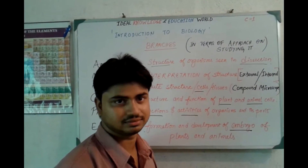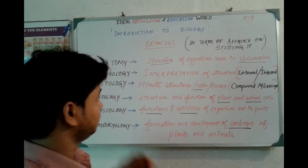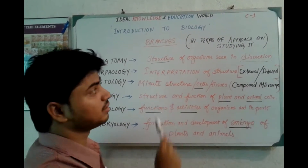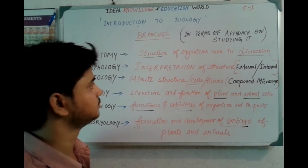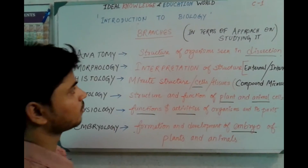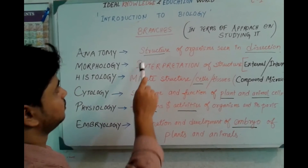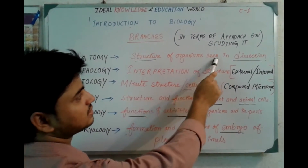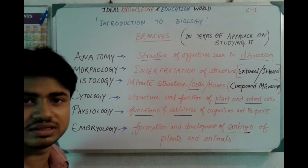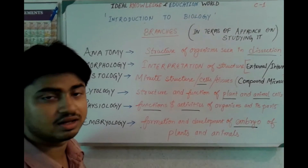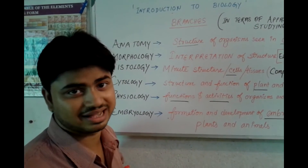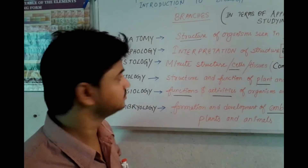Now we move to branches of biology in terms of approach to studying. The first is anatomy — the structure of an organism as seen through dissection. Anatomy is the study of structure after the dissection of an organism.